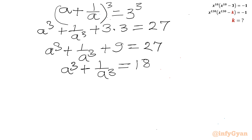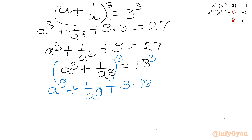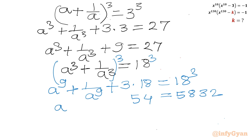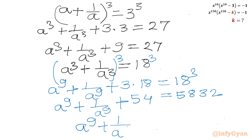To find a^9 plus 1 over a^9, I cube the result for a^3 plus 1 over a^3 once again. This gives a^9 plus 1 over a^9 plus 3 times 18 equal to 18^3. The value of 18^3 is 5832, and 3 times 18 is 54. Subtracting 54 from both sides: a^9 plus 1 over a^9 equals 5832 minus 54, which equals 5778.